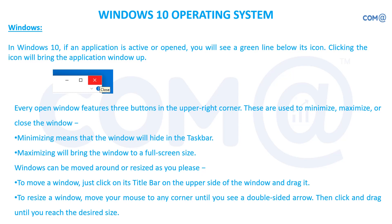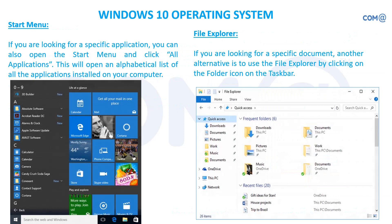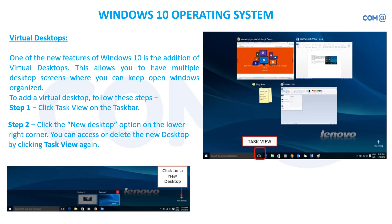The normal Windows options to minimize, maximize, and close applications are available here as in all Microsoft products. You can personalize the desktop background — the same options as in Windows 7 and 8 — and add your own photos for easy identification. Pressing the Windows key gives you the start menu. Press Windows key + E to get File Explorer, or type it in the taskbar, or click the folder icon available there.